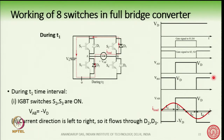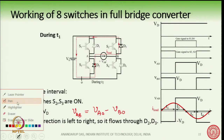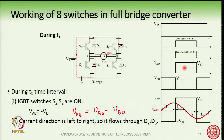Similar to the half bridge where we analyzed all the switches, I will analyze one or two here. There is a VAO voltage which is VD and there is a VBO voltage shown here, depending on how the gate signals are applied. Gate signal S1 and S4 is applied, so VAO voltage becomes VD, and with the gate signal applied to the other leg VBO is produced. During this time, the VAB voltage is nothing but VAO minus VBO — VAB equals VAO minus VBO.